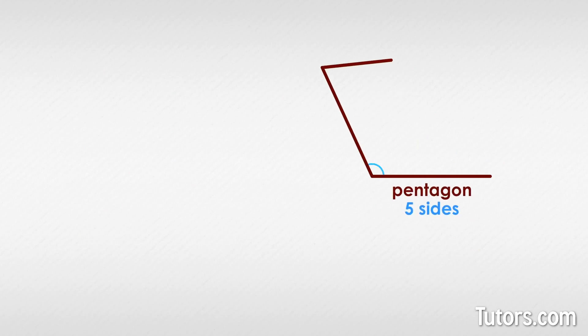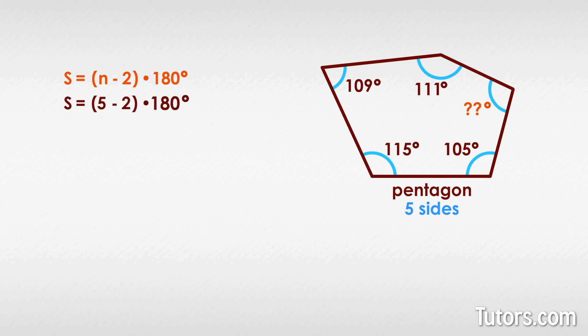Here is a wacky pentagon with no two sides equal. The formula tells us that a pentagon, no matter its shape, must have interior angles adding to 540 degrees. So, subtracting the four known angles from 540 degrees will leave you with the missing angle. The unknown angle is 100 degrees.